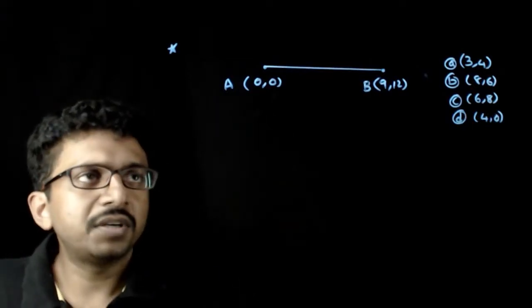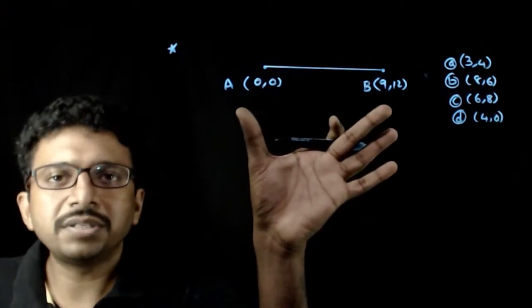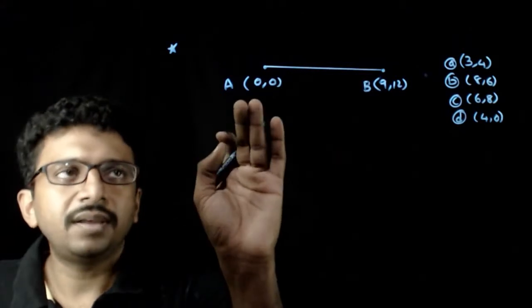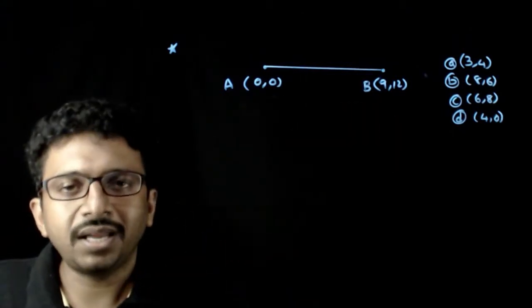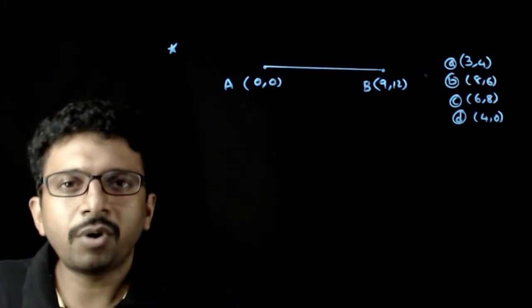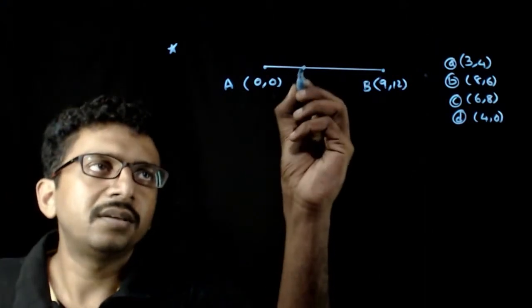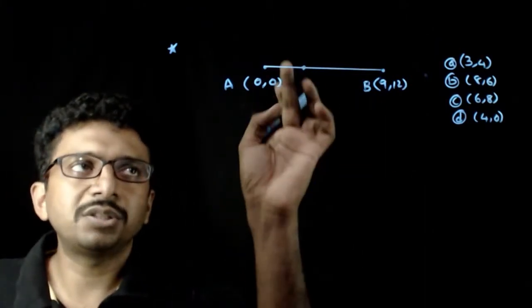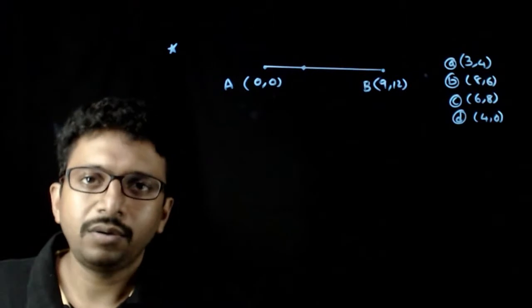Welcome students. In this question you are asked to find the points of trisection of A at 0 comma 0 and B at 9 comma 5. We know that the points of trisection are the points which divide AB in the ratio either 1 is to 2 or 2 is to 1.